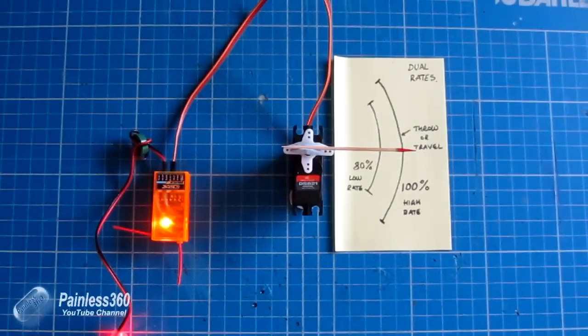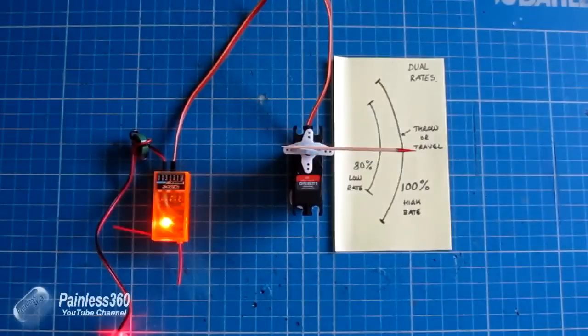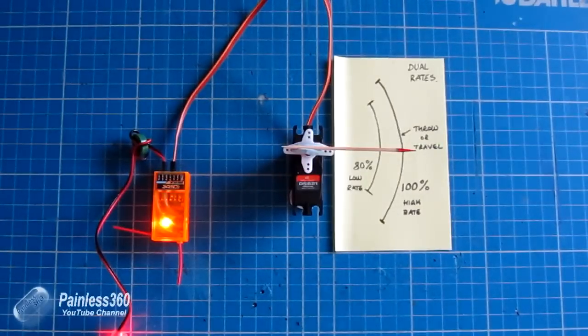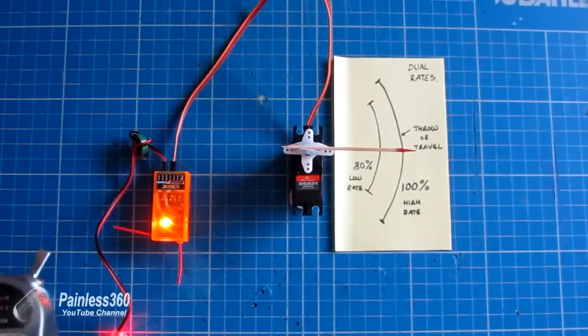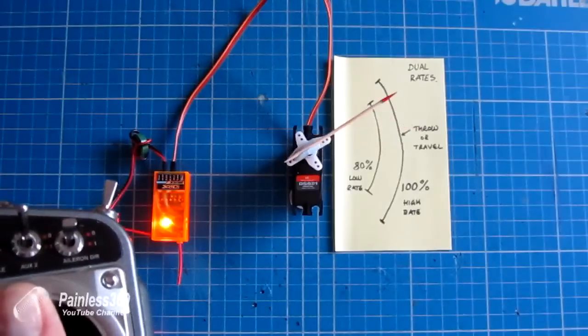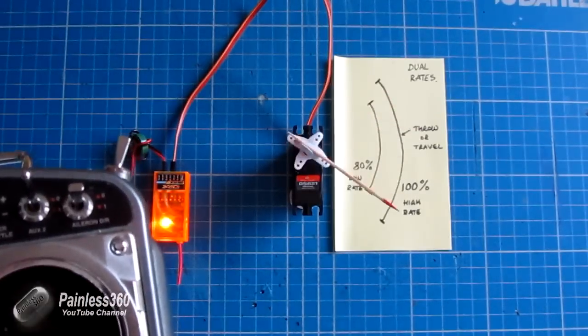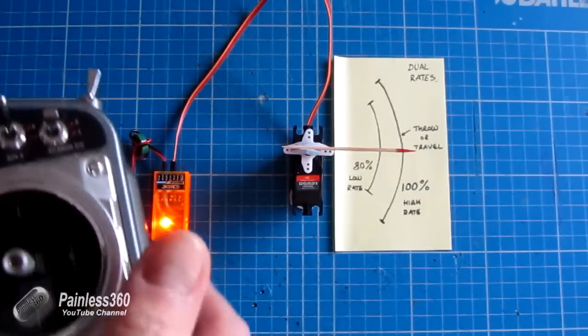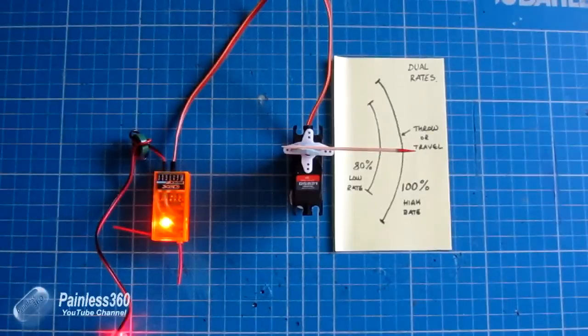But why would I want it? What's the point of dual rates? Well, the point is that this servo might be connected to a control surface on your craft. So let's assume it's connected to the elevator because that's what we're using here today. So it might be that you want the craft to be nice and calm, so you use the 80% settings first, so you limit the amount of movement on that control surface at the back of the model.